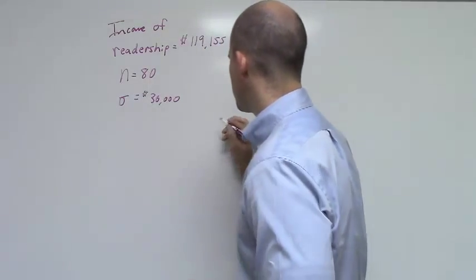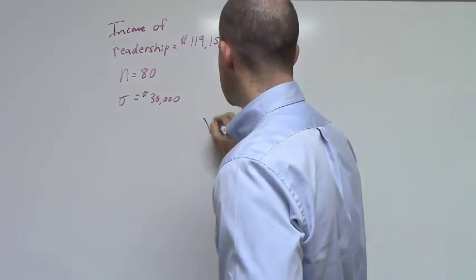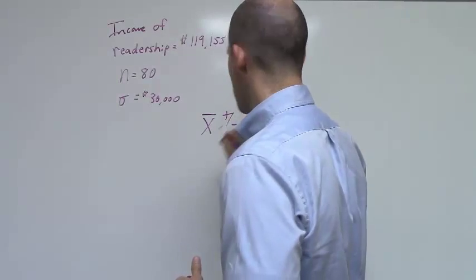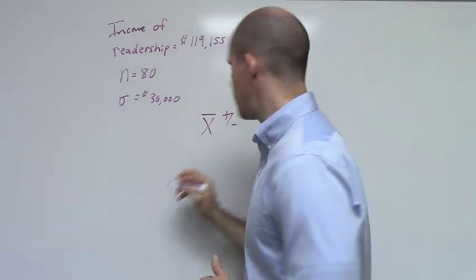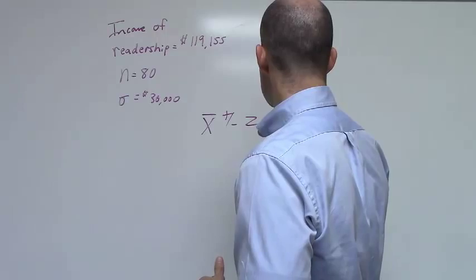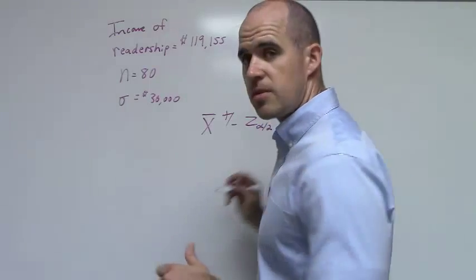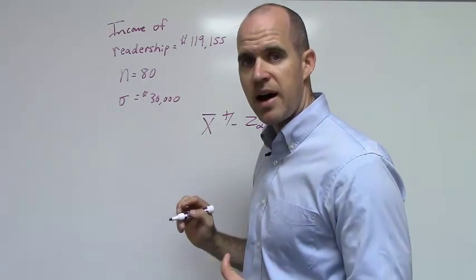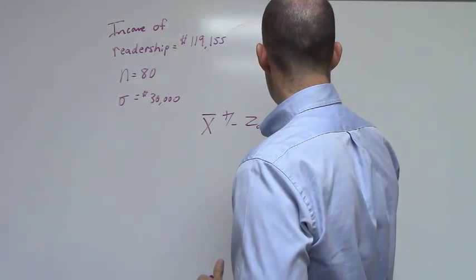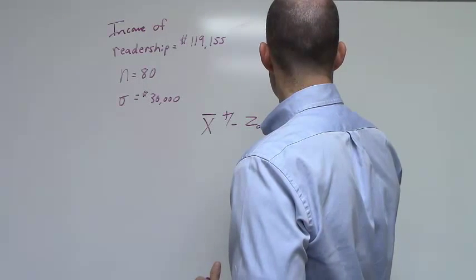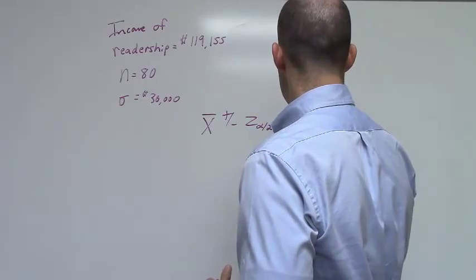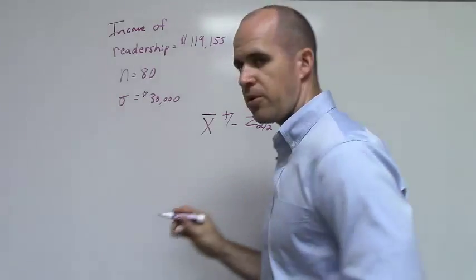Recall that the formula for doing this is X-bar, my sample mean, plus or minus Z alpha divided by 2. And then I'm going to multiply this by the standard error, which in this case is going to be my population standard deviation divided by the square root of my sample size.